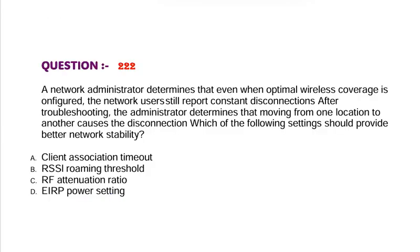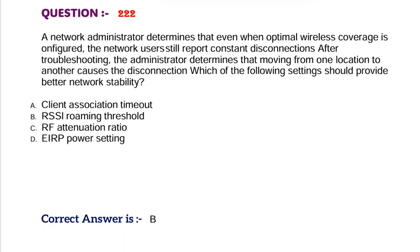Question: A network administrator determines that even when optimal wireless coverage is configured, network users still report constant disconnections. After troubleshooting, the administrator determines that moving from one location to another causes the disconnection. Which of the following settings should provide better network stability? Option A, client association timeout. Option B, RSSI roaming threshold. Option C, RF authentication ratio. Option D, EIRP power setting. Correct answer is Option B.